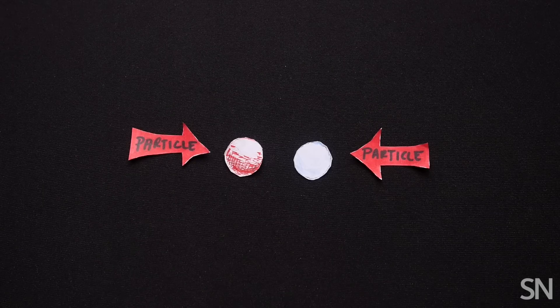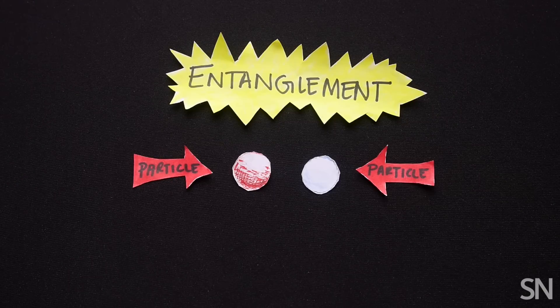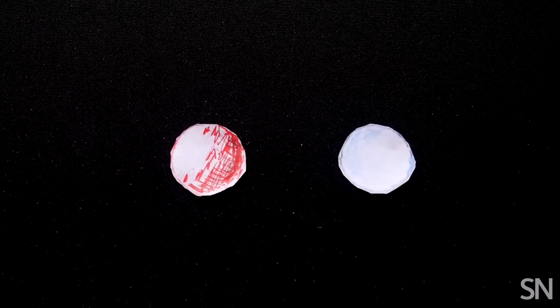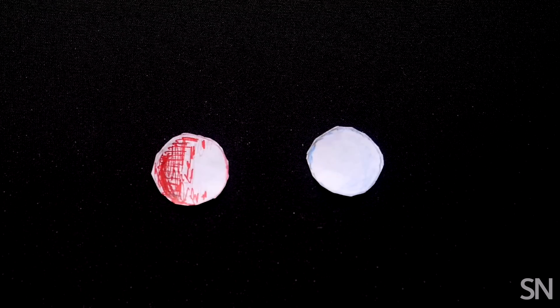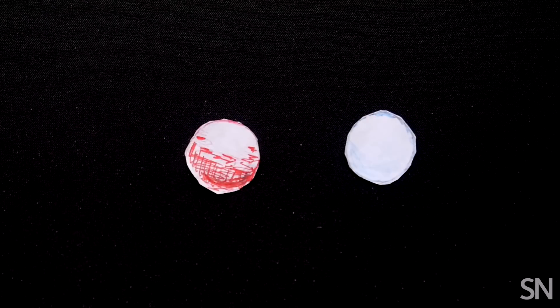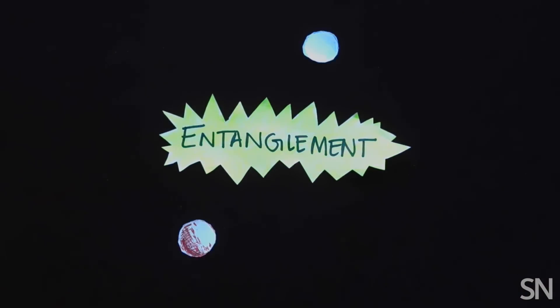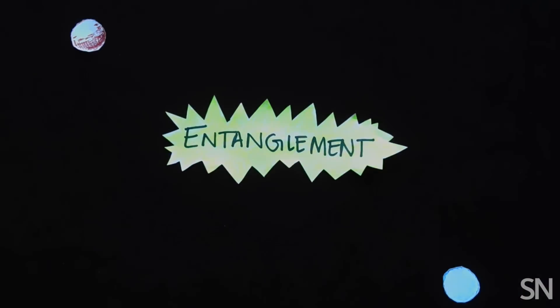That's when two particles become mysteriously linked. When you measure some property, like spin, of one particle, you automatically know what the spin of its partner will be. Even if that other particle is on the opposite side of the universe. Weird, right? Let's break it down.